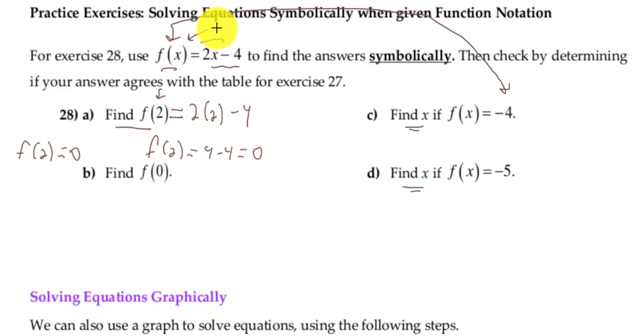So negative 4 equals 2x minus 4. So if I add 4 to both sides, I end up with 0 equals 2x, and if I divide both sides by 2, I get 0 equals x. And then let's just do one more. I'm going to erase this, so if you want to pause and copy, that's fine.